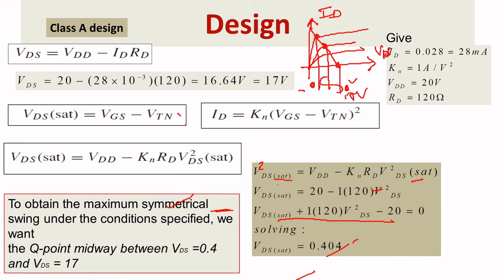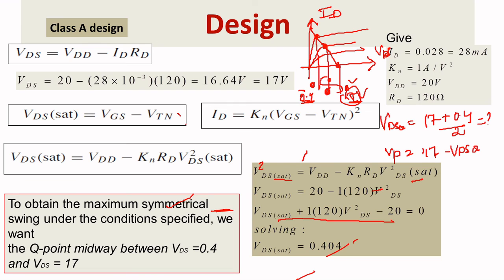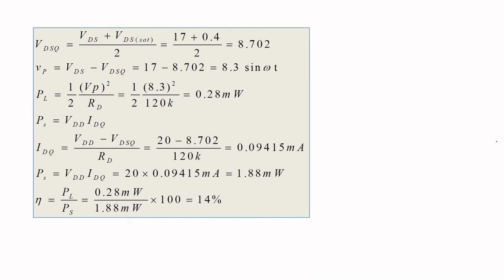Your understanding is: the minimum point is 0.404. To find the center point VDSQ, add the minimum and maximum and divide by 2: (17 + 0.4) / 2, giving 8.702. The peak voltage is the maximum minus VDSQ: 17 minus 8.702 equals 8.3 volts. The signal representation is 8.3 sine omega t. The load power is (1/2) times 8.3 squared divided by 120 ohms, giving 0.28 milliwatts.